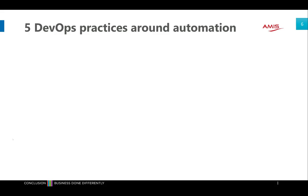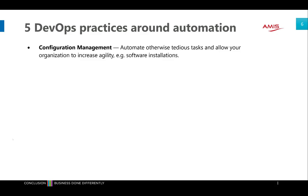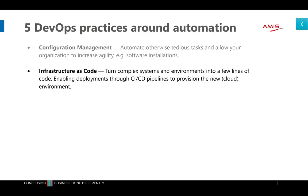The first practice is configuration management — automating tedious, everyday tasks that are constantly the same, like importing data from CSV to a database, installing software, or doing patching and updates. Configuration management allows your organization to increase agility. The second is infrastructure as code, where we turn complex systems and environments into just a few lines of code. These files are human readable, can easily be changed, and enable deployment through CI/CD pipelines, allowing us to provision new cloud environments.